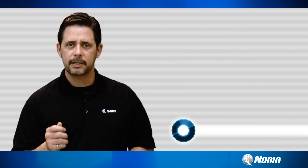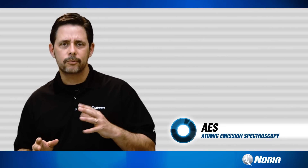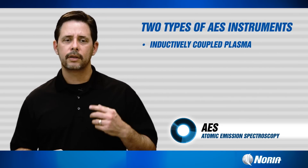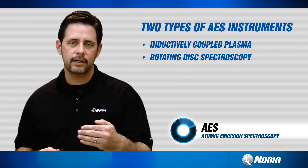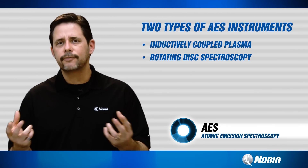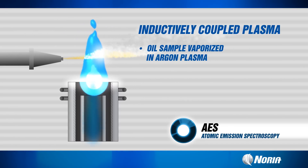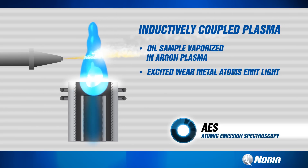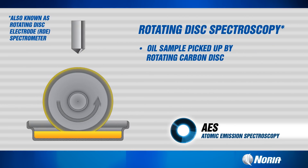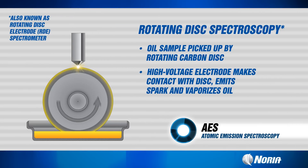Our used oil analysis labs today for the most part use one of two types of instruments: either the ICP or the ROTRODE. The ICP stands for inductively coupled plasma. ROTRODE is rotating disc spectroscopy, or arc spark emissions. The main difference between these two methods is really just how the oil sample is vaporized. The ICP sample is vaporized in an argon plasma, exciting the particles which then result in light emission. With rotating disc or ROTRODE spectroscopy, that sample is picked up on a carbon disc and passes underneath an electrode where a high voltage spark contacts the oil, vaporizing it and exciting the particles, causing them to emit light.